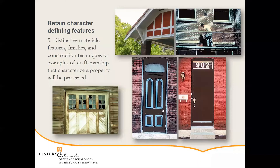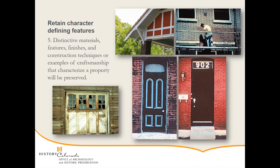Number five is to retain character-defining features. If at this point you're thinking this all sounds a little repetitive, that's because it is — we're just trying to preserve historic materials. Character-defining features can be historic details like doors, windows, and brick pointing techniques. As a whole, these can all make a big difference on the integrity of the property.